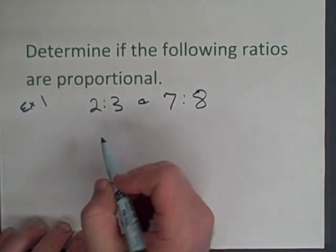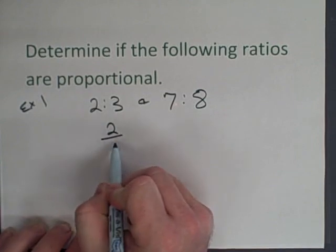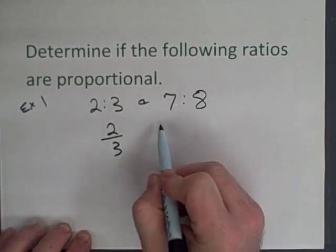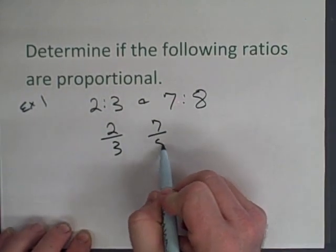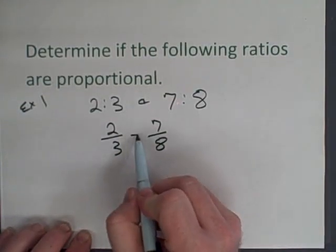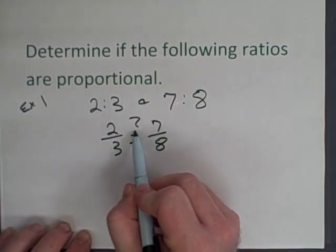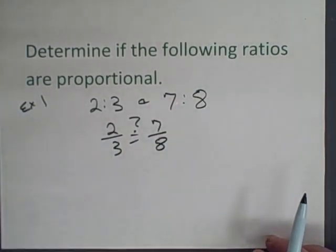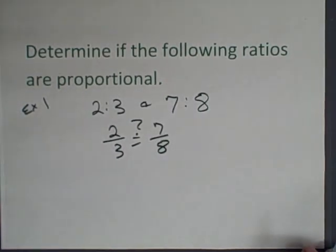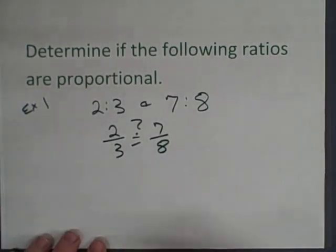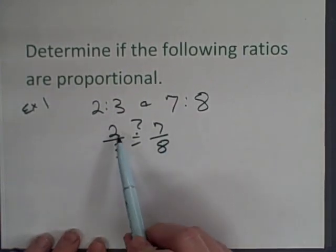A couple ways you can do this. You can write them as fractions two to three and seven to eight. And then you're asking whether or not they are equal so I've got a question mark over there. Now you can also reduce the fractions and you'll notice that these fractions are both reduced and they do not say the same thing. This fraction is two thirds and this is seven eighths so they're not the same.